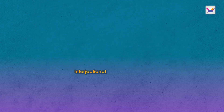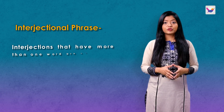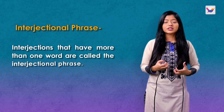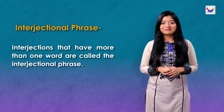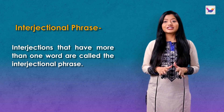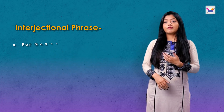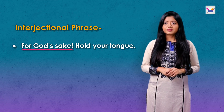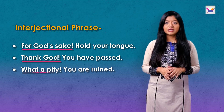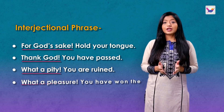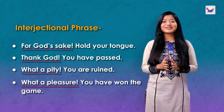Now we will learn what an interjectional phrase is. When a phrase expresses sudden emotion or excitement like an interjection, we call it an interjectional phrase. Interjectional phrases generally have more than one word. For example: 'For God's sake, hold your tongue.' 'Thank God, you have passed.' 'What a pity, you are ruined.' 'What a pleasure, you have won the game.' The underlined words are the interjectional phrases.